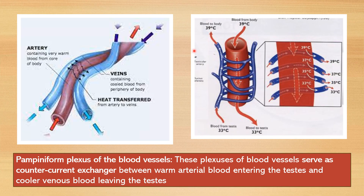The second explanation is the presence of the pampiniform plexus of blood vessels. These vessels serve as a counter-current exchanger between the warm arterial blood entering via the testicular artery and the cooler venous blood leaving the testis. As the warm arterial blood moves down, it releases heat, attaining a temperature of 33 degrees centigrade at the lower part, and this heat is carried away by the venous blood. This counter-current exchange action of the pampiniform plexus helps maintain scrotal temperature below core body temperature.